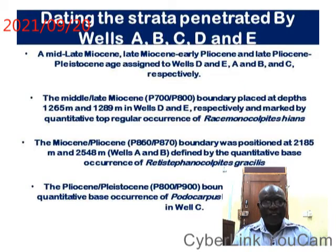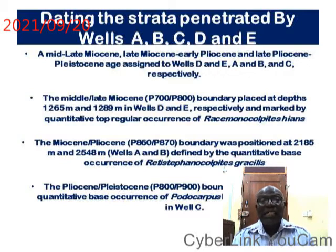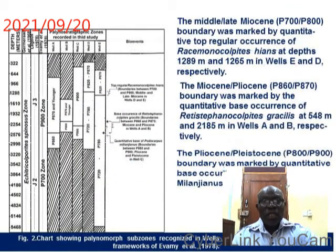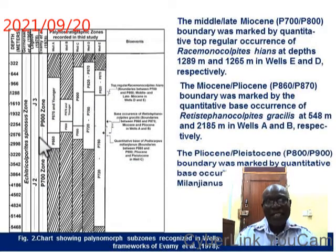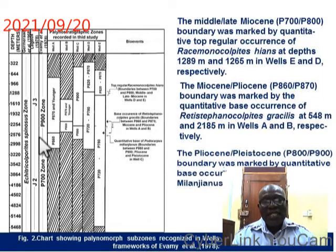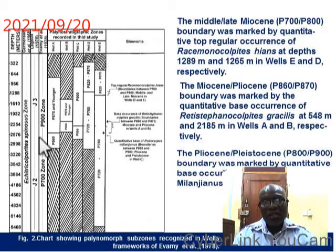Results. The five wells were dated based on the indexed palynomorphs that were recovered from these wells. The diagram below shows that the five wells — A, B, C, D, and E — belong to P700 zones to P900 zones of Foraminifera Zones (FMZR) 1978, and the boundaries between the P700 and P900 zones of each well are shown above.